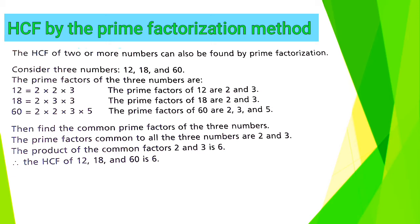Then find the Common Prime Factors of the 3 numbers. The Prime Factors common to all the 3 numbers are 2 and 3. The product of the Common Factors 2 and 3 is 6. Therefore the HCF of 12, 18 and 60 is 6. Don't worry, I will explain it in simple words.